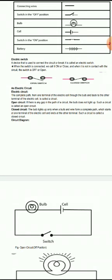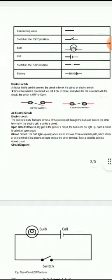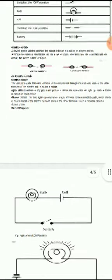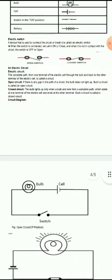open. The key and figure explain this. An electric circuit: the complete path from one terminal of the electric cell through the bulb and back to the other terminal of the electric cell is called a circuit. There are